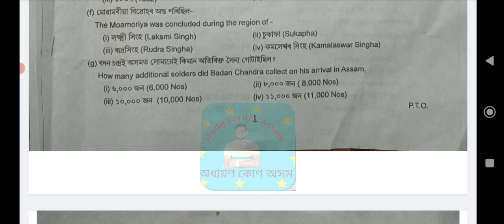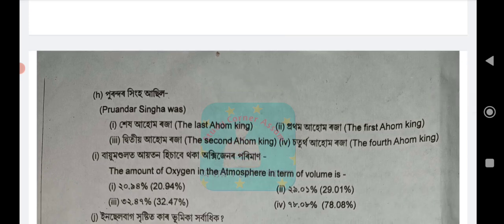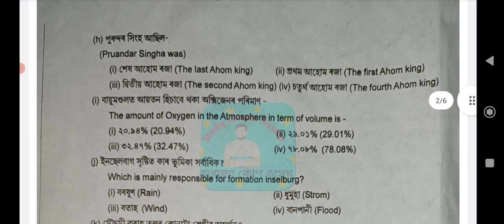Next question H: Was Purandar Singha the last, first, second, or fourth Ahom King? The answer is option number 1: the last Ahom King. Next question A: The percentage of oxygen in the atmosphere is — 20.94, 29.01, 32.47, or 78.08? The answer is option number 1: 20.94.